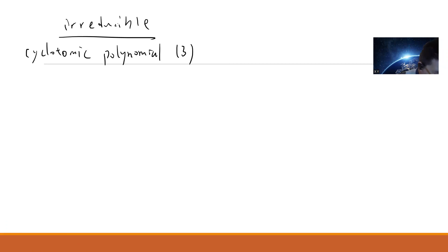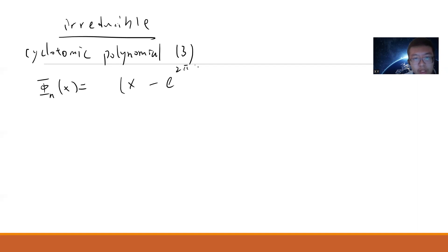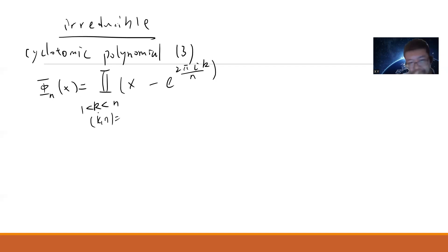So the idea — remember that we define φₙ(x) to be the product of (x minus e^(2πi·k/n)), where k goes from 1 to n, and k is coprime to n. This kind of k gives what is called the primitive roots.